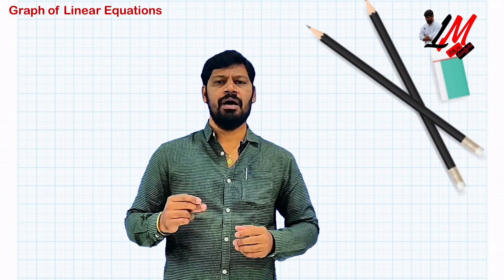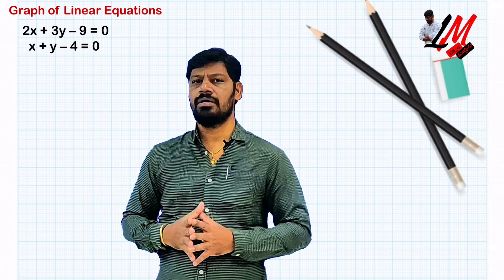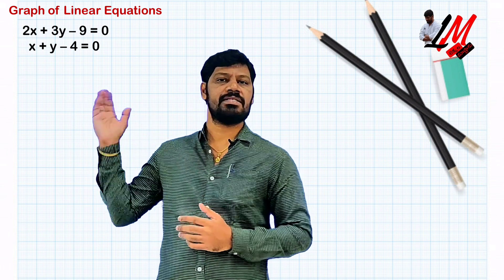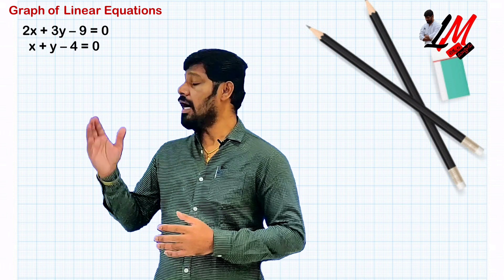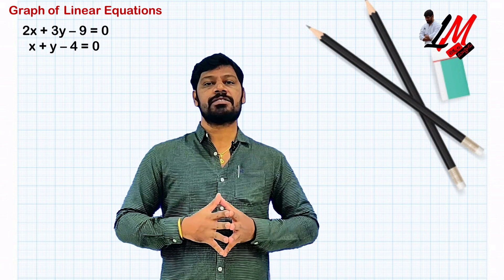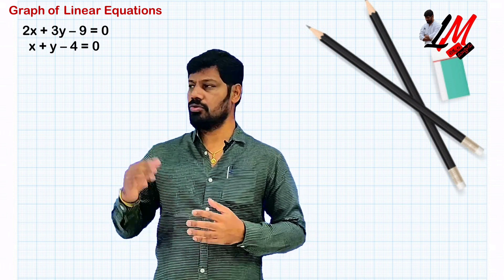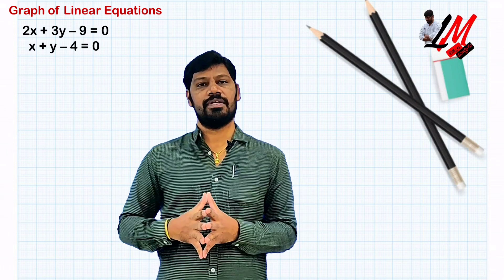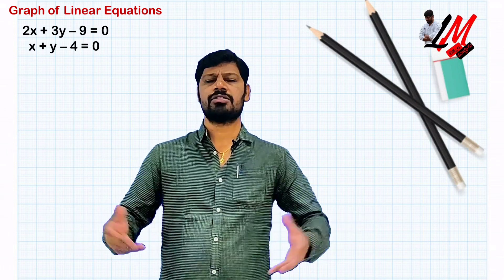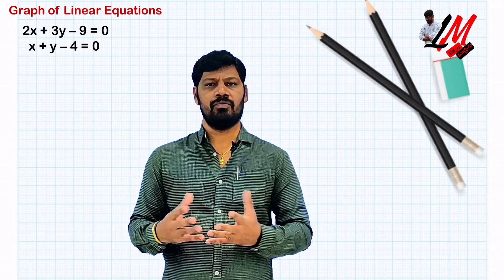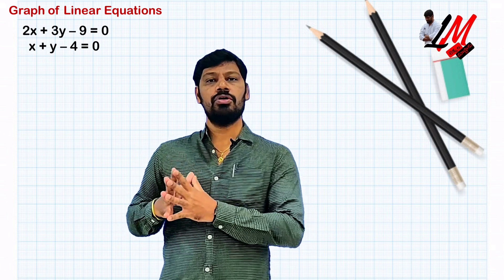Without wasting time, let me take one example: 2x + 3y − 9 = 0 and x + y − 4 = 0. This is the given system of equations and we are asked to draw the graph or solve graphically.